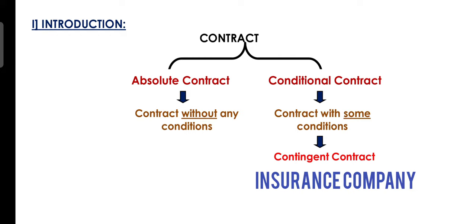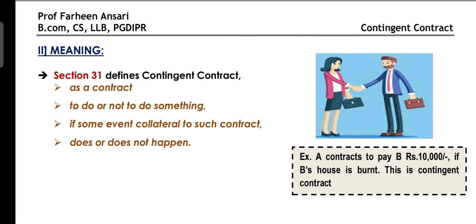For example, you take a fire insurance for three years and start paying the premium. The contract states that if a fire occurs within those three years, the insurance company will compensate you. So performance depends on whether a specific event happens or not — this is called a Contingent Contract. Now let's see the definition under Section 31, which says a Contingent Contract is a contract to do something or not to do something, if an event connected to the main contract happens or does not happen.